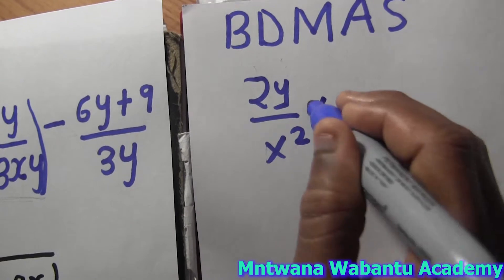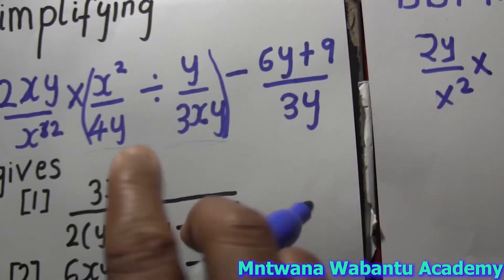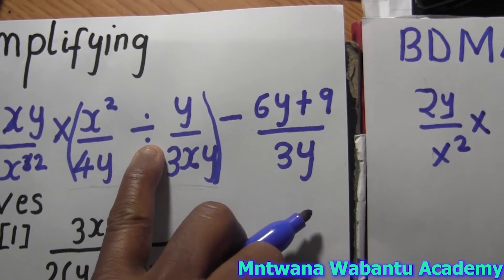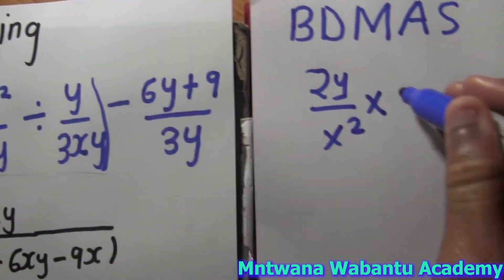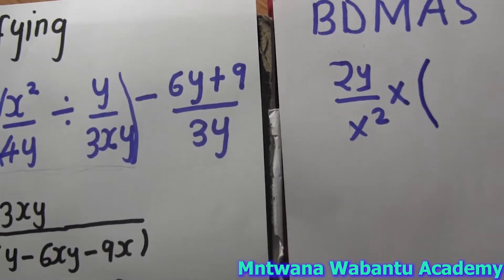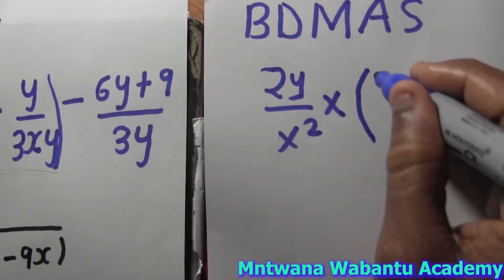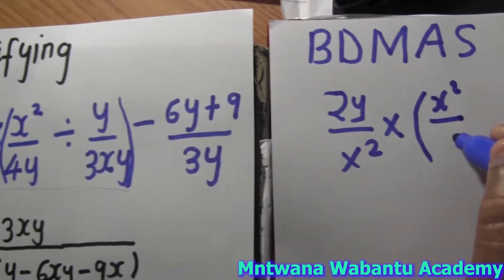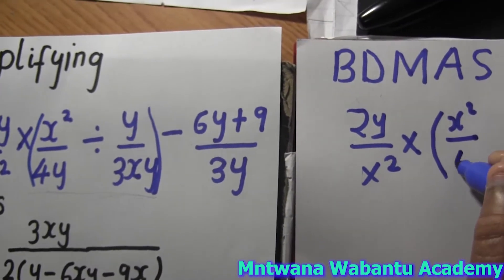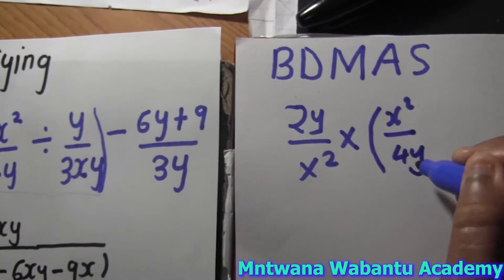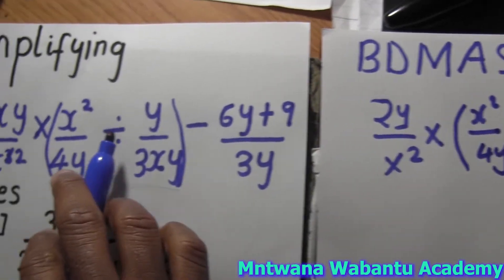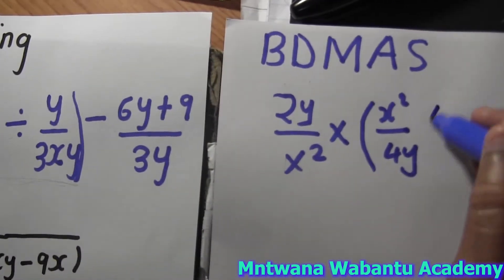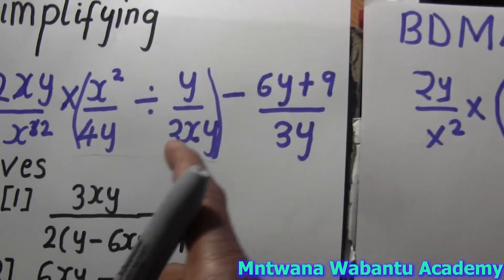And then we'll multiply by — we put our bracket. So you have x squared over 4y. And then we're going to flip. When you divide, you flip and multiply. This one goes to the top and the top goes to the bottom. So y is going to flip to the bottom and 3x goes up.